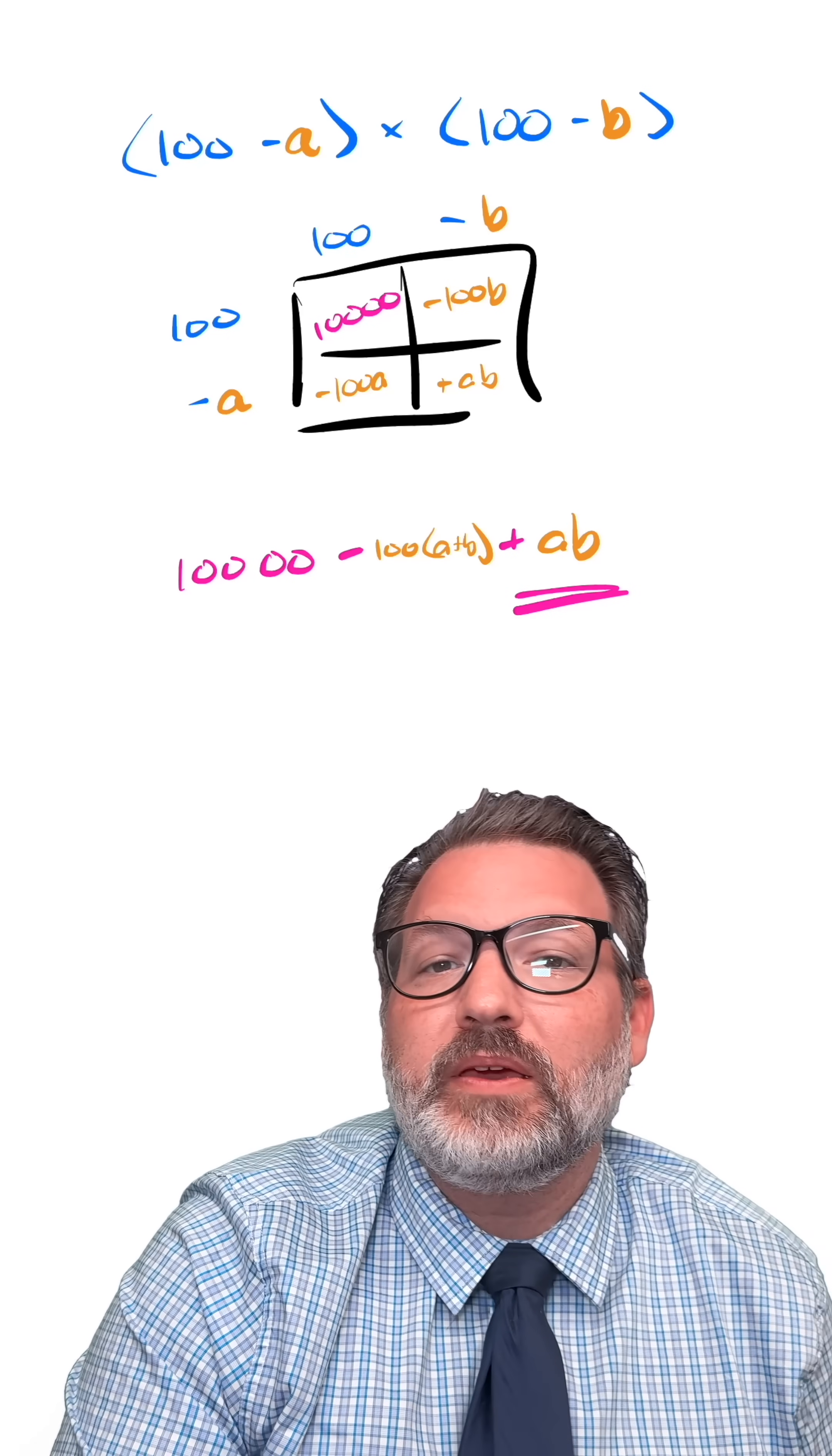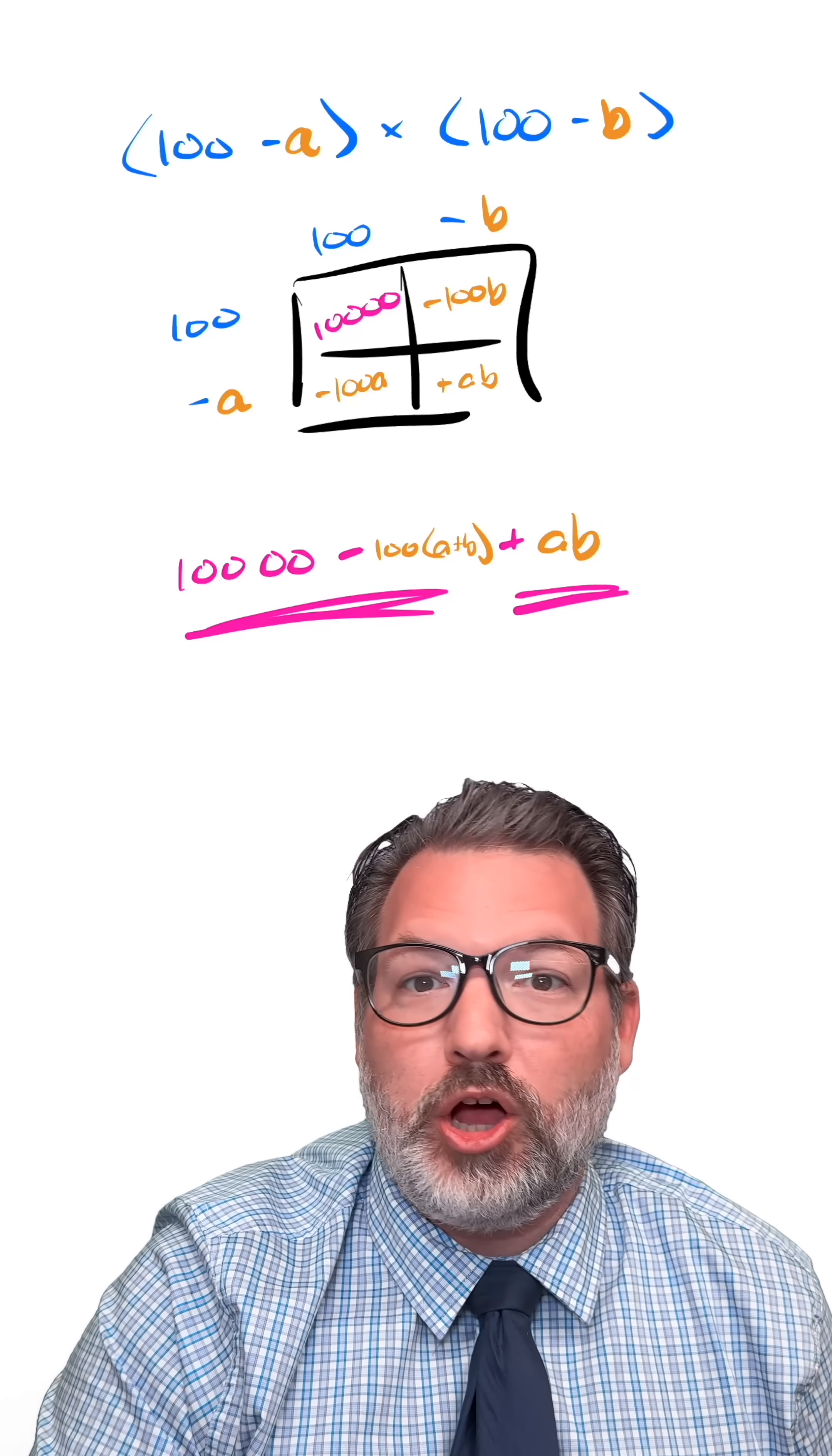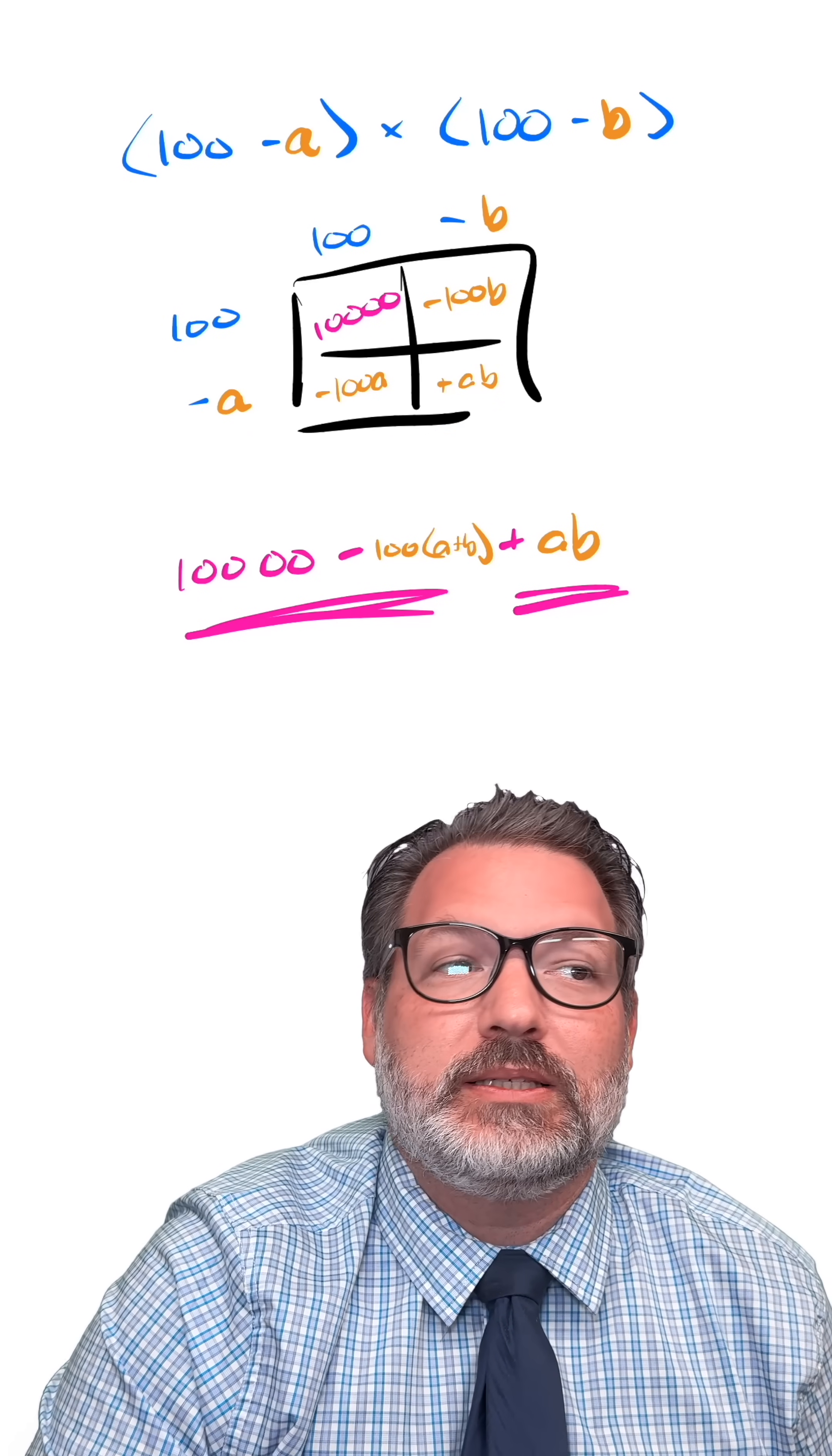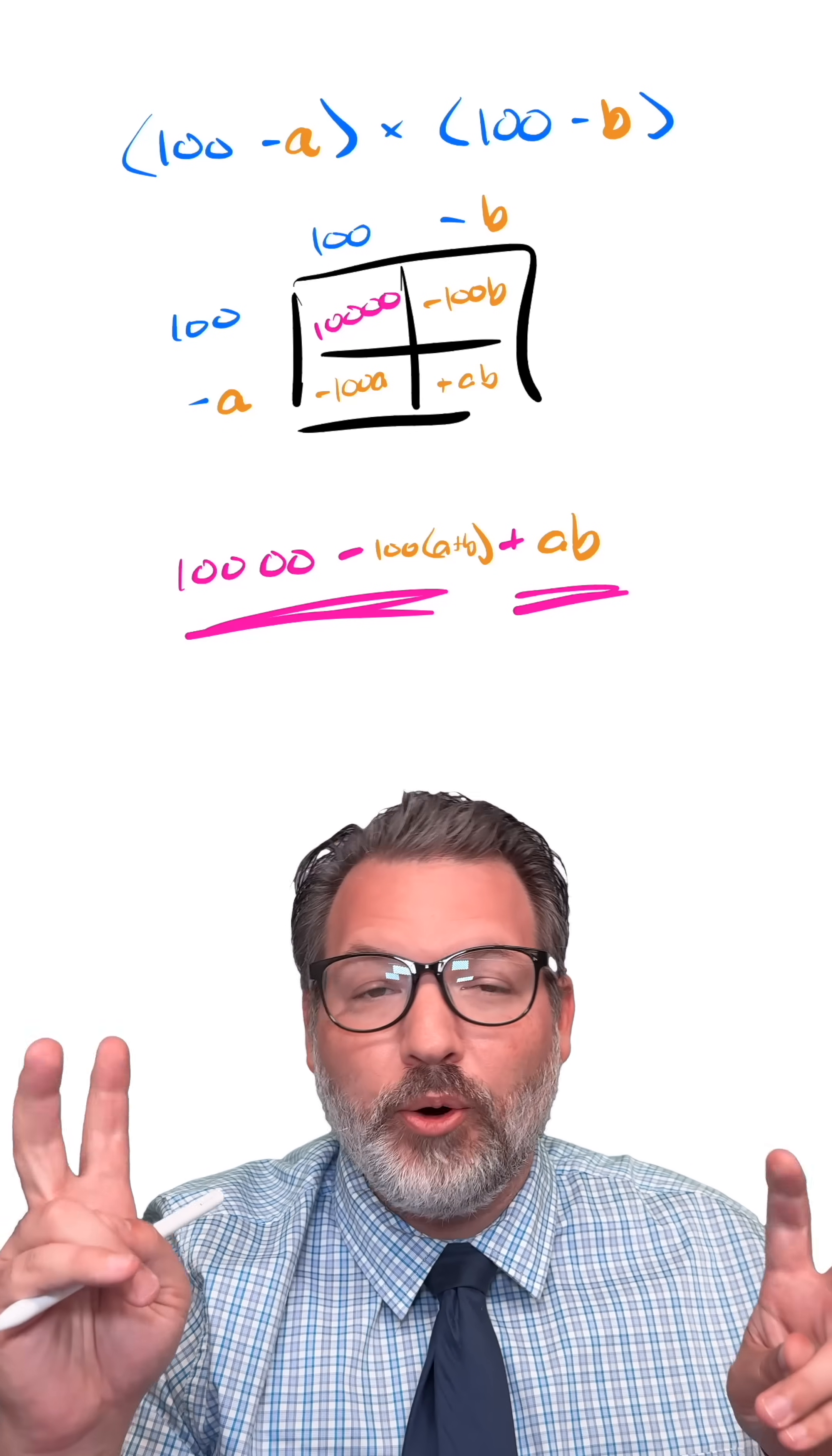And this will always end up giving us the final two digits of the product and the first two digits of the product, with just some subtraction and simple multiplication, rather than our long standard algorithm for two-digit by two-digit multiplication. There are so many uses for binomial expansions like this. Obviously, we don't typically do this just for multiplication tricks. More often, we're doing something with quadratic equations. But that is how the trick works.